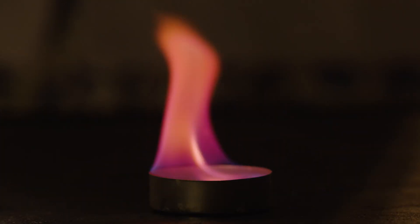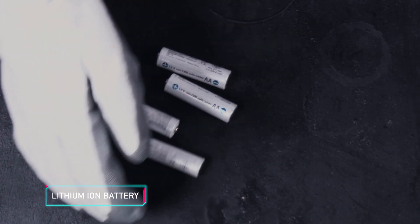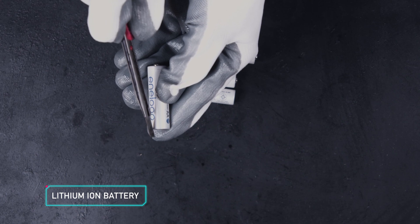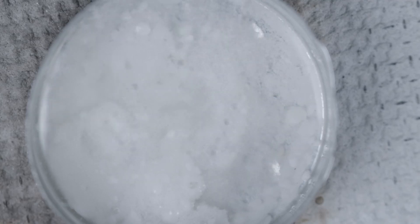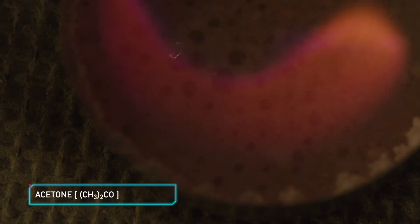If you want a red flame, you will need to cut up a few lithium-ion batteries. Mix the lithium you have taken from the batteries in some acetone and light it on fire for a really bright and awesome red flame.